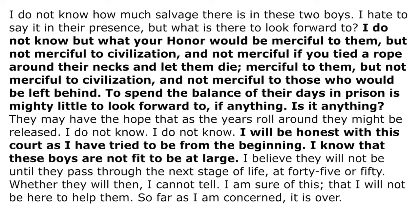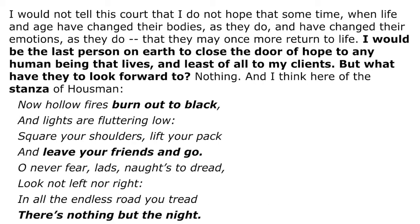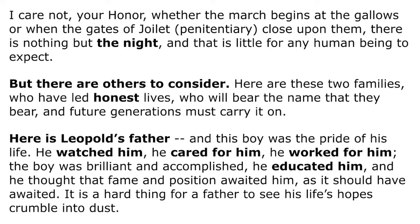You'll notice Clarence Darrow is talking about mercy here. Anytime you see an abstract concept like justice or mercy, that's going to be important — you want to figure out what the speaker is saying about those concepts. This is the fourth paragraph, and he actually includes a stanza of poetry here. If you have an outside source like this, ask yourself why he's citing poetry. I bolded certain words to figure out how that stanza related to his overall message. You'll also notice he referenced 'the night' from the previous paragraph in the poem. Now he's starting to shift his focus to the families of his clients — and if you notice a shift in tone or topic, it's important to note that.